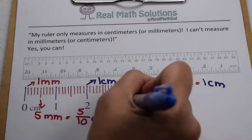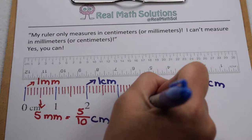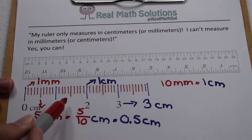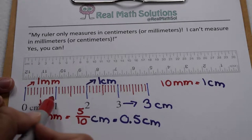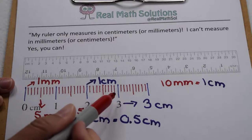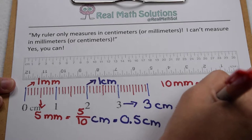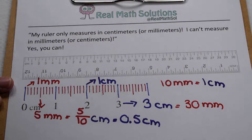Let's look at going the other way. Here I have three, which is my three centimeters. Well, I know that it takes 10 millimeters to make a centimeter. So if we count 10, 20, 30, three centimeters would also be the same as saying I have 30 millimeters.